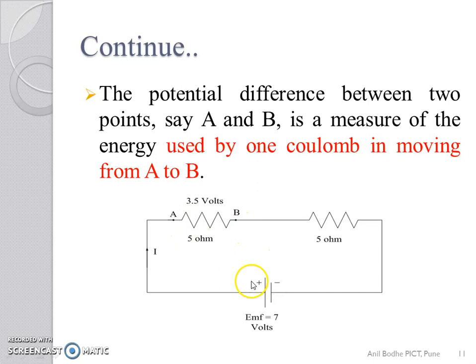Now, what exactly happens in this circuit is, battery supplies energy to each Coulomb continuously, as each Coulomb travels from positive terminal to the negative terminal of the battery.